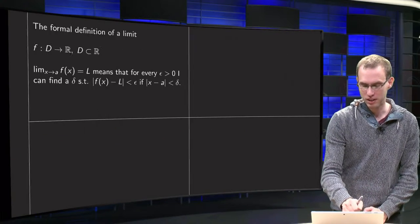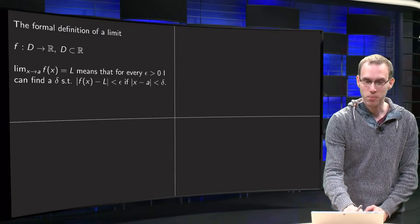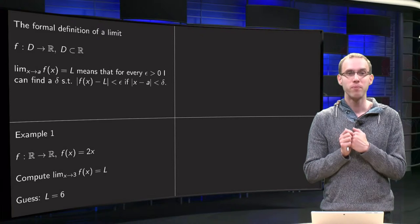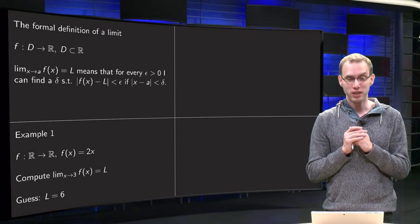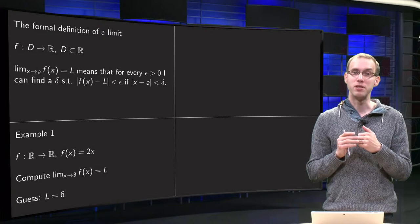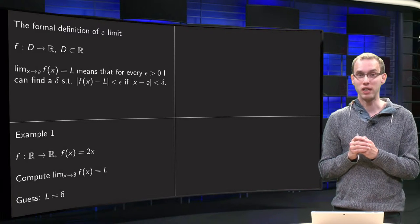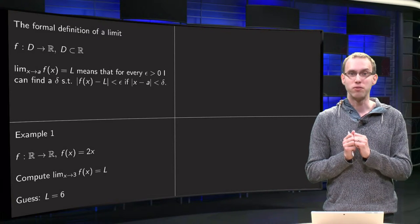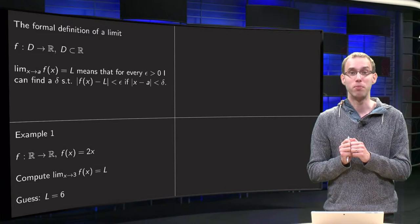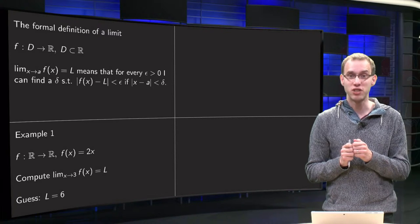So how does that work in practice? Let's do some examples. Example 1: you can take f from R to R, and f(x) equals 2x, and I am wondering what happens if you take x to 3. Well, you can make a graph or anything to figure out that the value of this limit will probably be 2 times 3 equals 6.